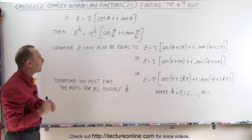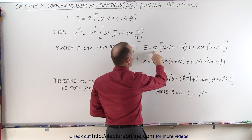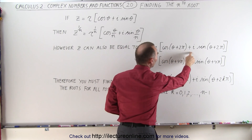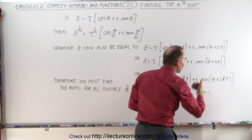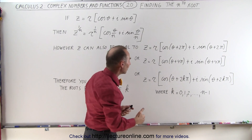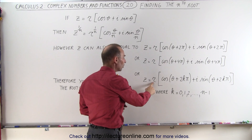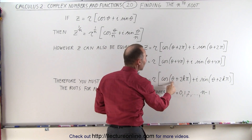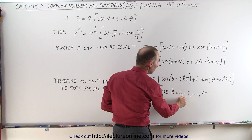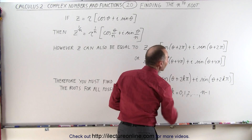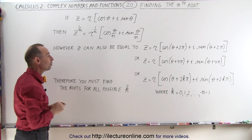However, we must realize that z can also be equal to r times the cosine of (θ + 2π) + i times the sine of (θ + 2π), or plus 4π, or plus 6π, or plus 8π. Continuing like that, we can say in general form, z can be represented by r, the modulus, times the cosine of (θ + 2kπ), where k is an integer that can be 0, 1, 2, all the way up to n minus 1.